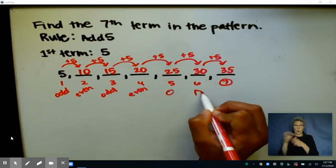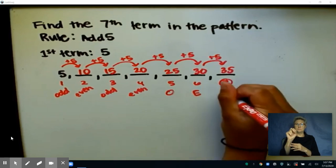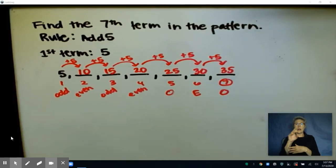So O for odd, E for even, and then again another odd here, right?